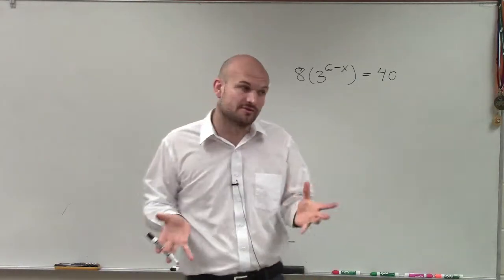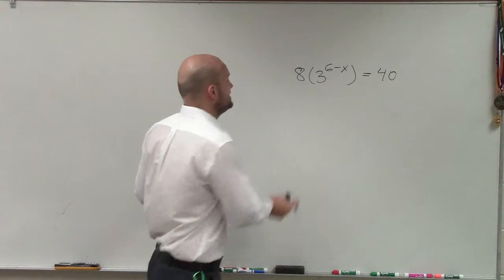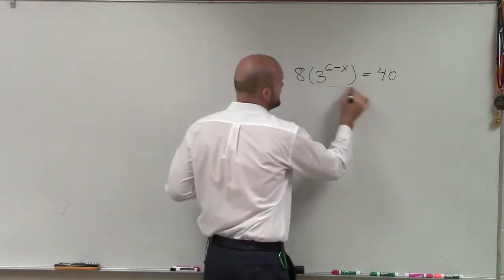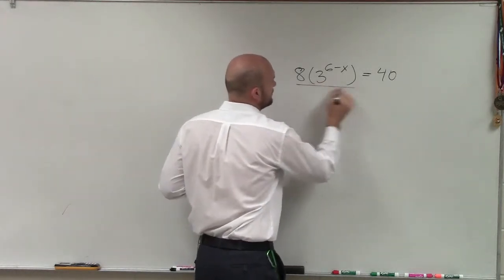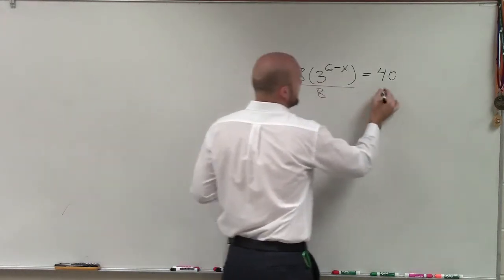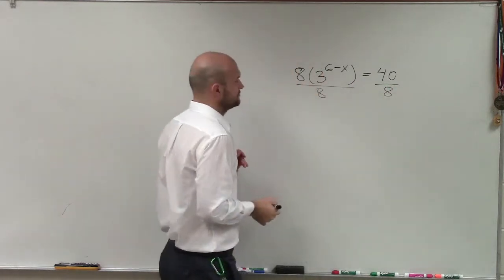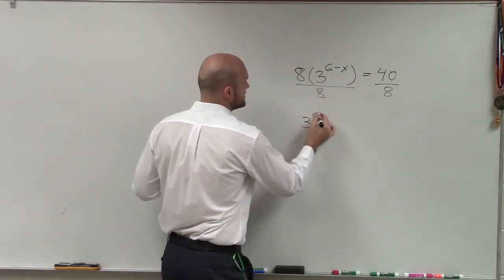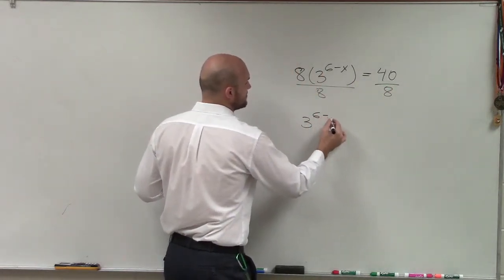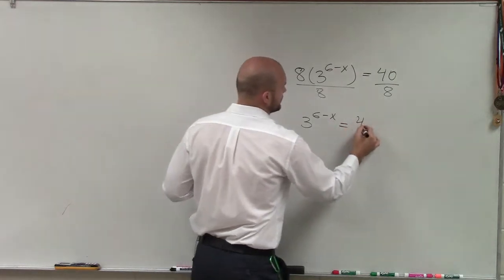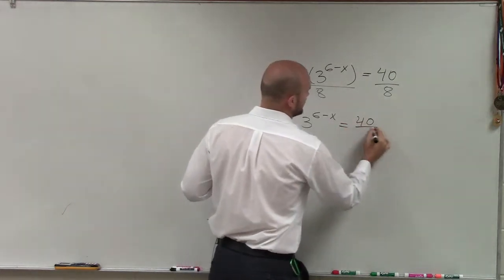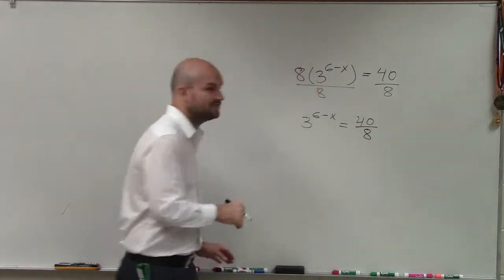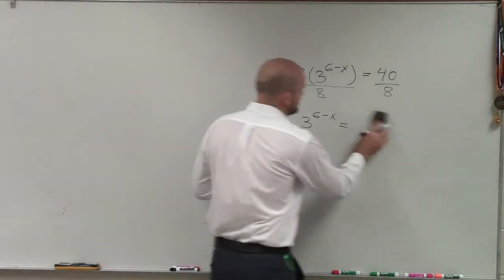Here, I need to isolate this base. So I'm going to divide. The first step is to divide by 8 on both sides. So now I have 3 raised to the 6 minus x equals 40 divided by 8, which is 5.